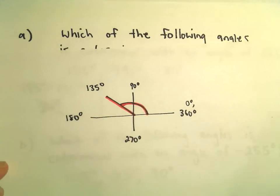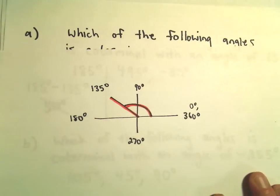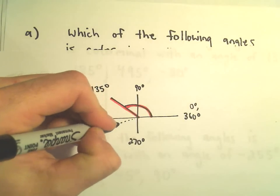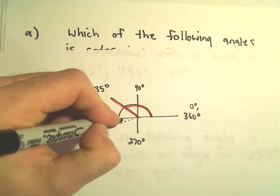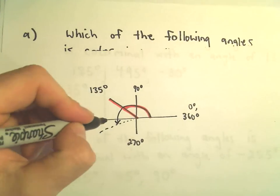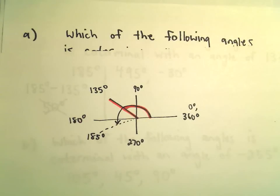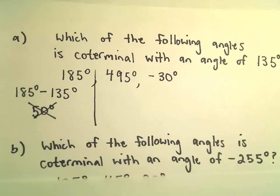And again, you can kind of see that. I made a quick little sketch here. Here's 135 degrees, 185 would be somewhere a little bit further down. So definitely those don't put you in the same spot at all. So it's kind of easy to see here with a little diagram. These are definitely not coterminal.